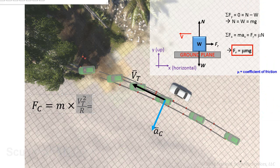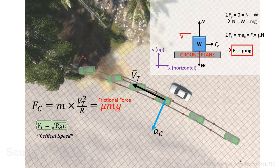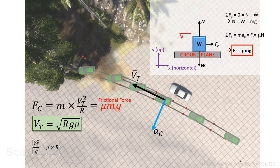Setting the centripetal force term equal to the frictional force Mg, one can solve for the tangential velocity of the car. This is given by the square root of the product of R times G times the coefficient of friction — the so-called critical speed formula. This implies the ratio of the square of the tangential velocity to G equals the coefficient of friction times R.